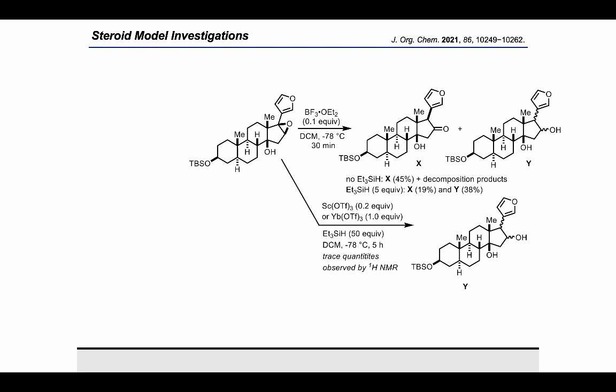However, during these optimization studies, we realized that more Lewis basic solvents, such as 1,4-dioxane or THF, may significantly improve formation of the ketone product. With this change, the yield was significantly increased to 93% by altering the solvent, temperature, and reaction time — using BF3·dietherate, 1,4-dioxane, and room temperature in a one-minute time span. Any longer and decomposition was seen to occur.